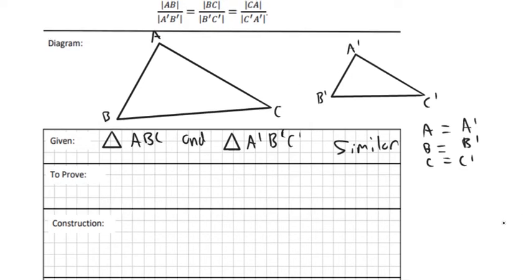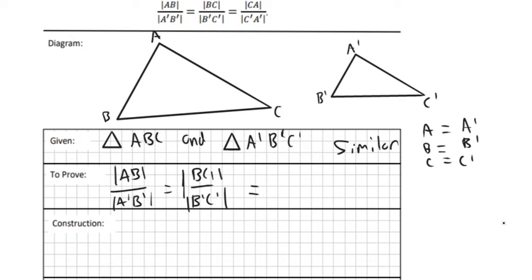So what we're really proving is that AB over A'B' is equal to BC over B'C', and also equal to AC over A'C'. In other words, this side over this side equals this side over this side equals this side over this side — they're all proportional to each other.